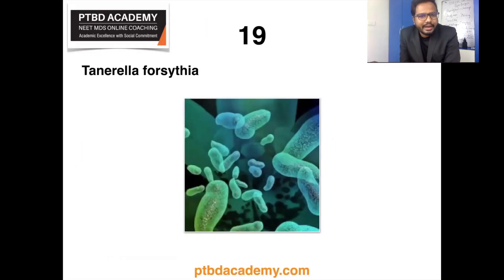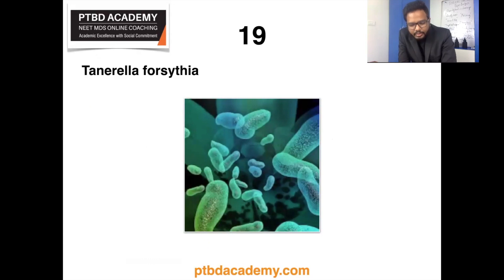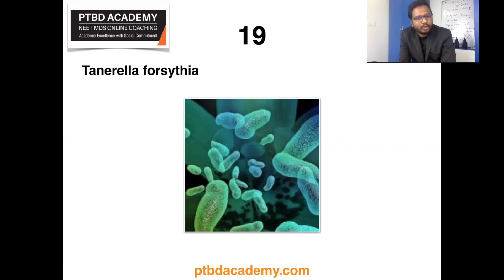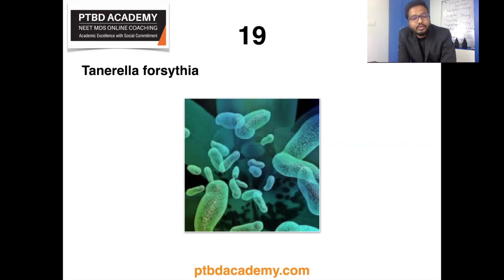There seems to be a question on Tannerella forsythia. Tannerella forsythia is an anaerobic gram-negative short bacillus and is an anaerobic gram-negative member of the Cytophaga-Bacteroides family, initially described as Bacteroides forsythus by Tanner et al. and later reclassified as Tannerella forsythia by Sakamoto et al. based on phylogenetic analysis. Tannerella forsythia is associated more frequently and in higher levels with diseases such as gingivitis, chronic and aggressive periodontitis. Several studies have also implicated Tannerella forsythia in the progression of clinical attachment loss associated with periodontitis.